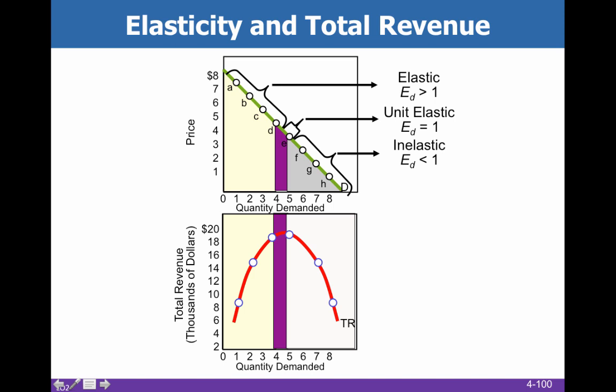Comparing this to the total revenue test: total revenue is rising as we lower price while we are in the elastic zone. Then we hit unit elastic, which is where total revenue maxes out. In the inelastic region, if we continue to lower price, total revenue is going to fall. Again, this isn't profit — we will bring profit in after we talk more about cost.